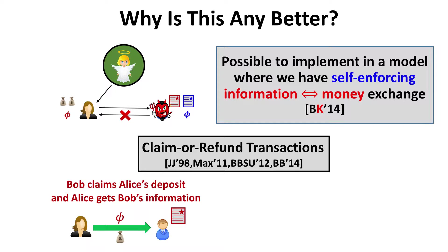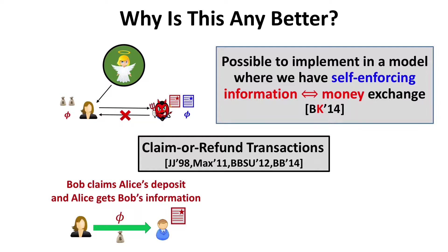We've jumped from an information escrow to a money escrow, but we are still using a trusted third party. So what you can show is a reduction from this money escrow to what I call a self-enforcing information-to-money exchange, which I call claim or refund transactions. Alice makes a conditional transaction to Bob — she puts some money and specifies a condition. Bob can claim the money as long as he provides information satisfying the condition. This transaction is atomic: once Alice puts the money, she cannot stop the payment.